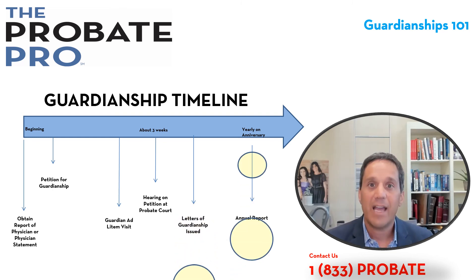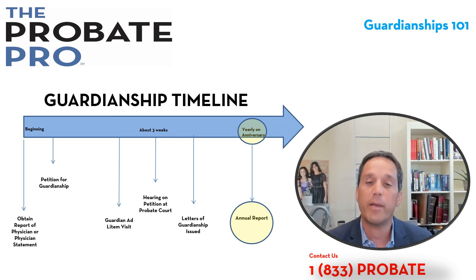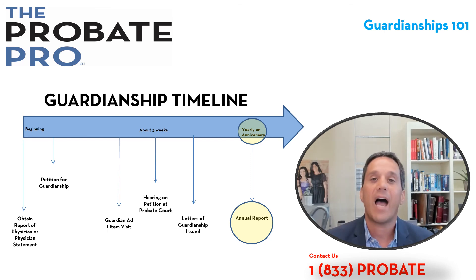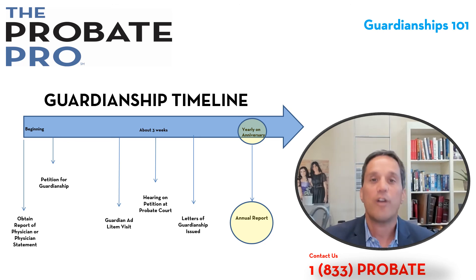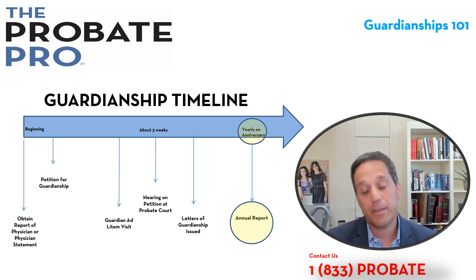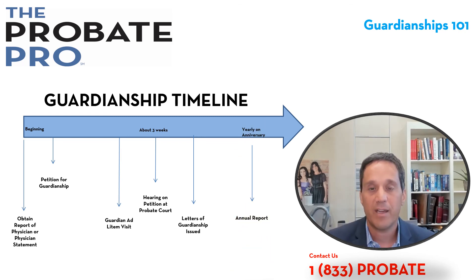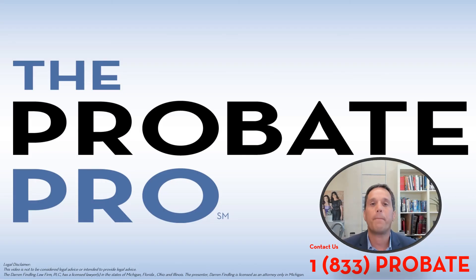After the hearing, letters of guardianship are issued, providing the power and authority for the guardian to act. Each year on the calendar anniversary of the initial appointment, the guardian is required to complete an annual report of guardian. That annual report identifies how the person is doing and whether there's a basis and need for the guardianship to continue. The process will continue from year to year until such time as the person either dies or there's a termination of the guardianship.